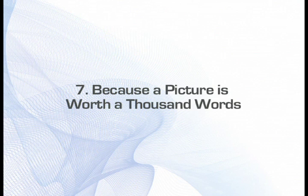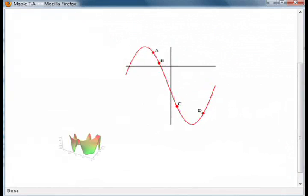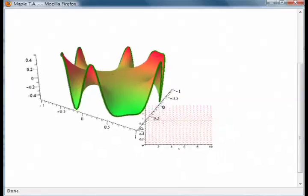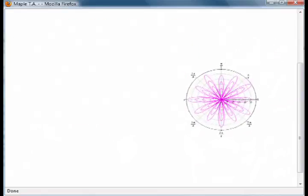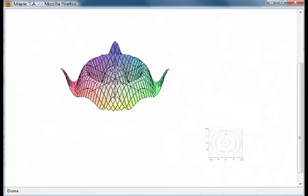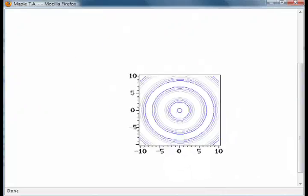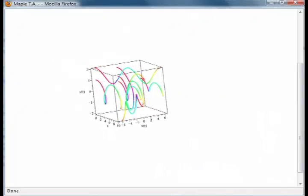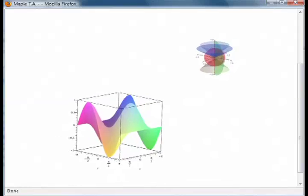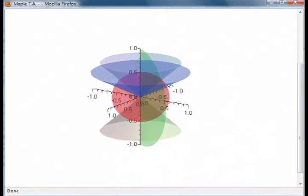Number 7. Because a picture is worth a thousand words. Visualization is an important component of most technical courses, but is notoriously difficult to do with paper and pencil. Maple TA makes including sophisticated visualizations in your questions easy through access to over 100 2D and 3D plot types and options from Maple.